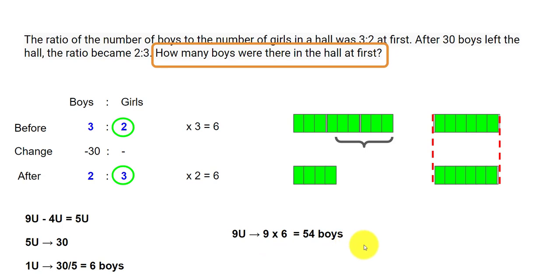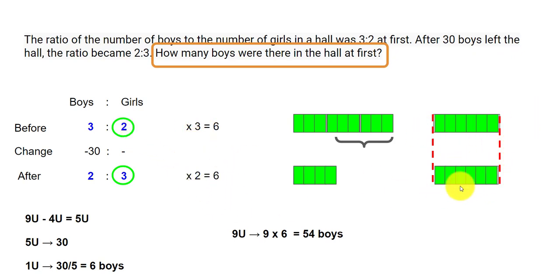The problem itself is straightforward. The key is to identify quantities that don't change — in this case, the number of girls did not change, so we use them as a reference. Find the LCM, convert the units into equal-sized units, figure out how many units are missing, and that way we can solve the problem.